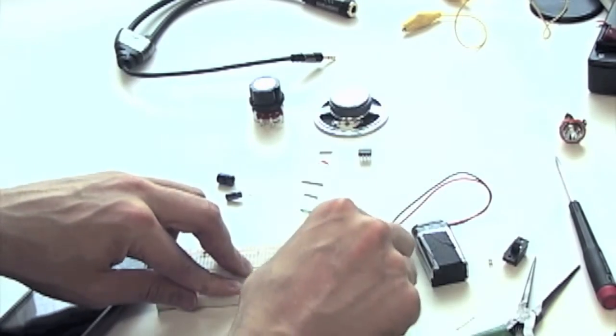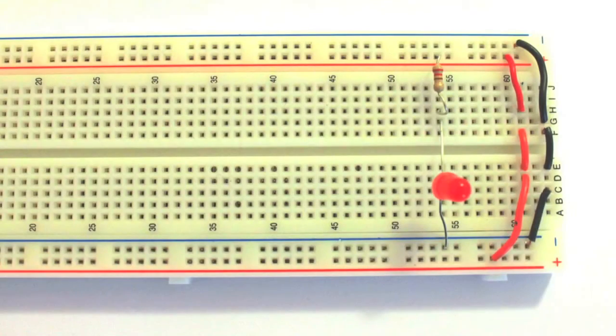Connect an LED in a 1 kiloohm resistor, as shown here. The cathode of the LED should go to ground.